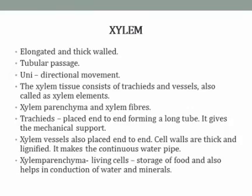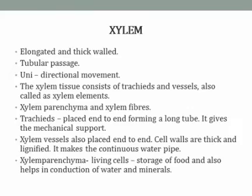The xylem tissues consist of four components: tracheids, vessels, xylem parenchyma, and xylem fibers. Tracheids are placed end to end, forming a long tube-like structure, and give mechanical support. Xylem vessels are also placed end to end with thick, lignified cell walls, making a continuous water pipe. Xylem parenchyma are living cells that act as storage of food and also help in conduction of water and minerals.